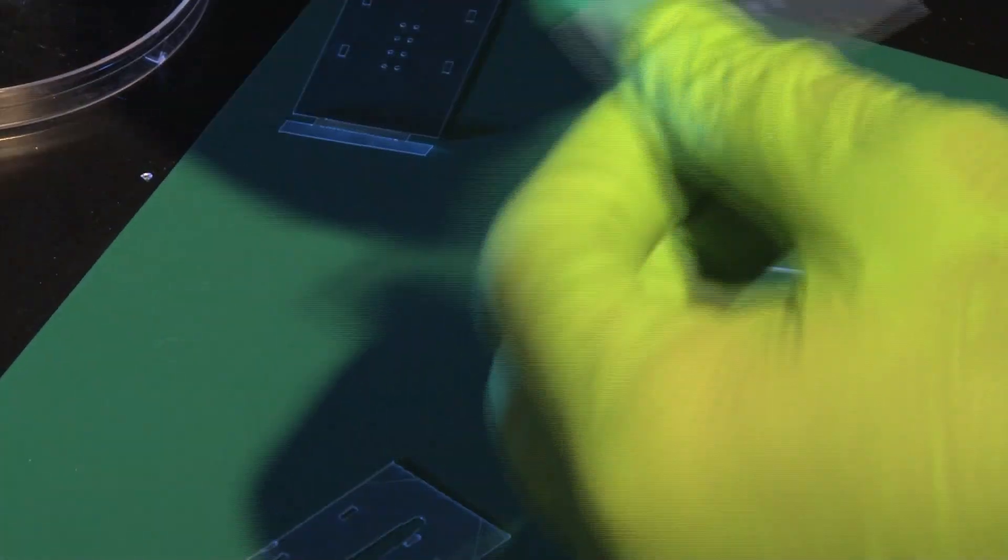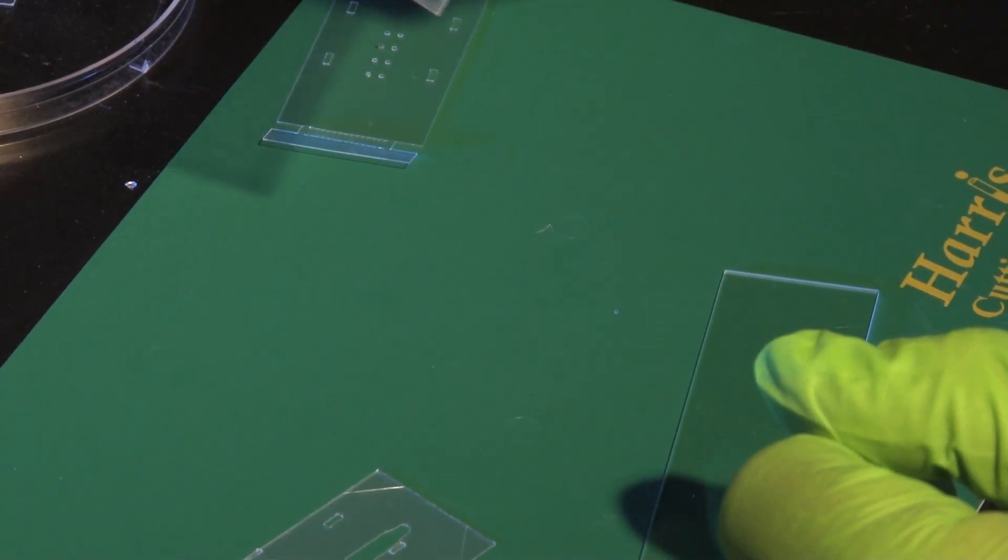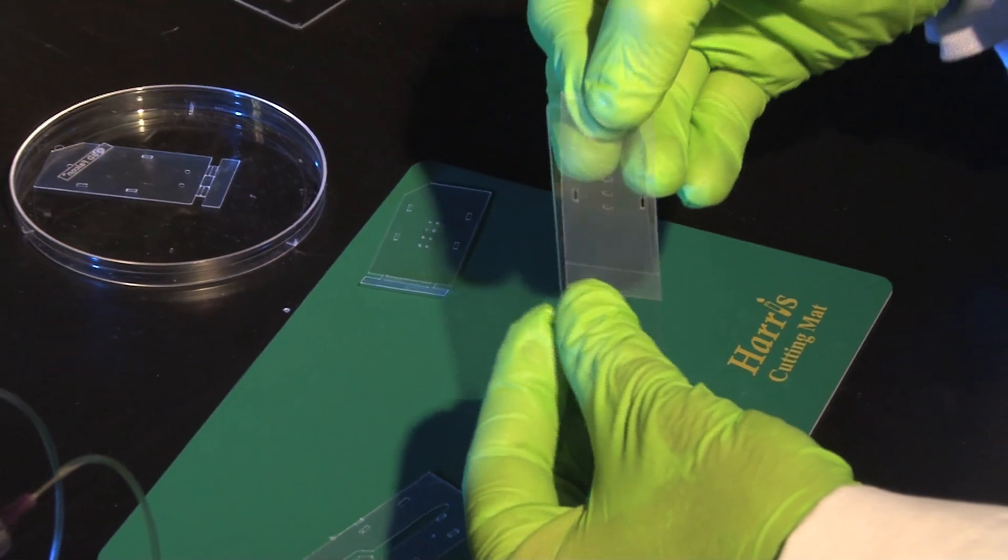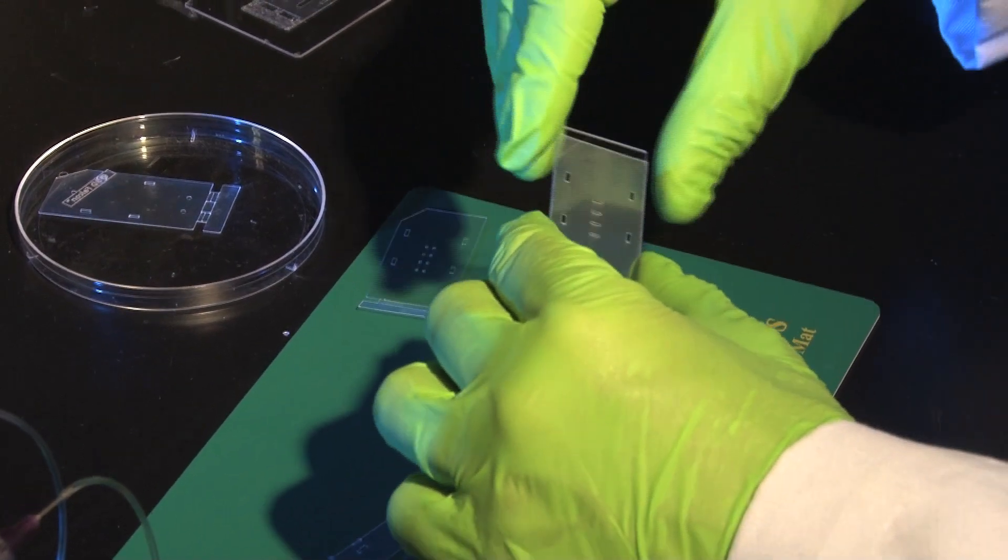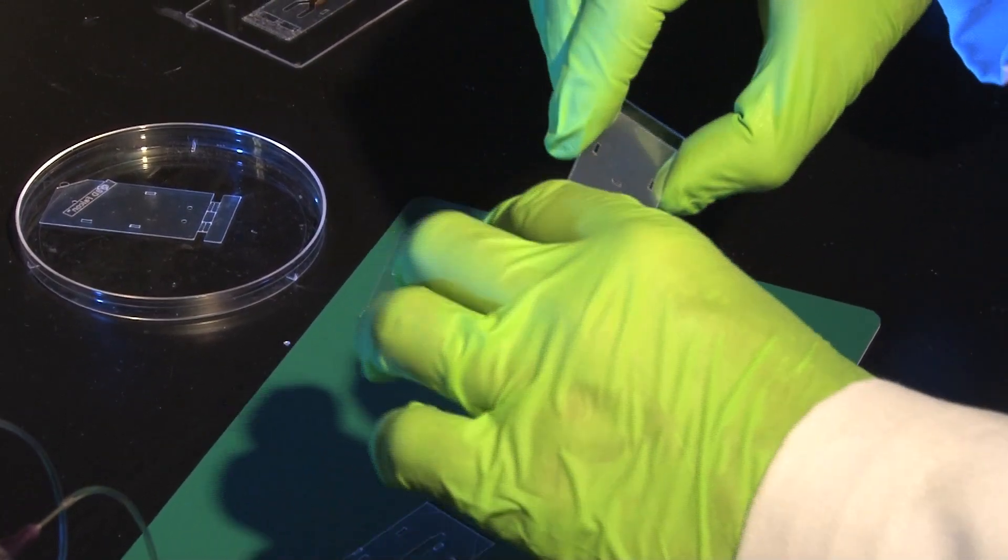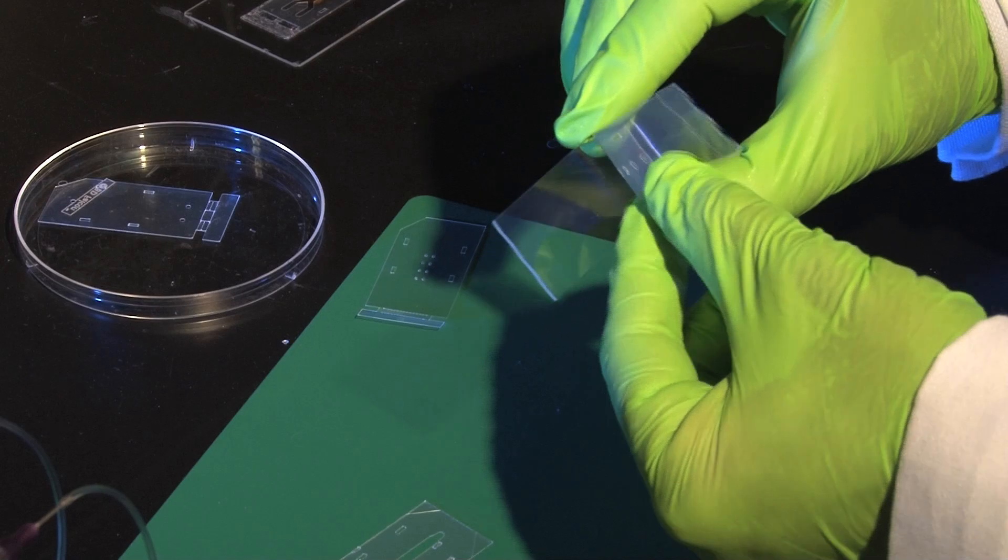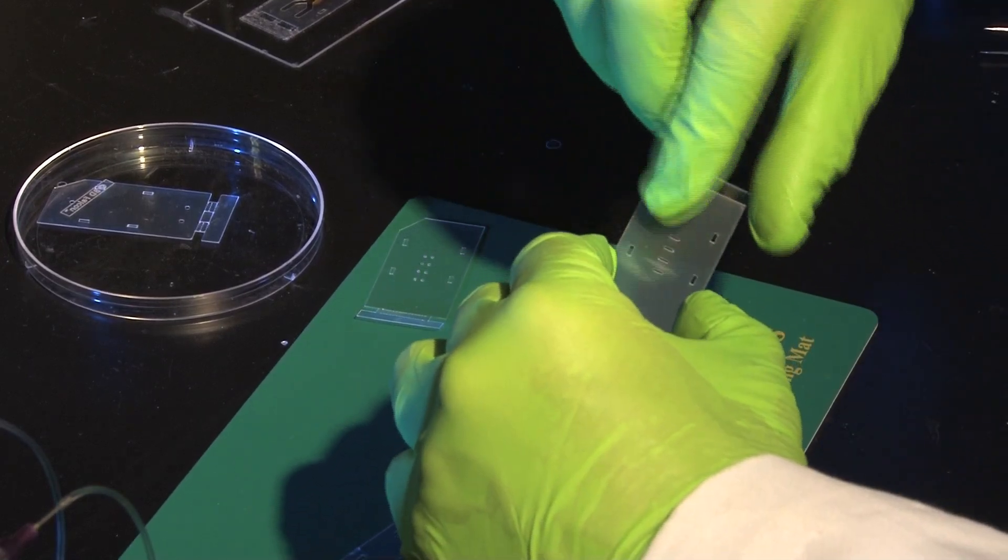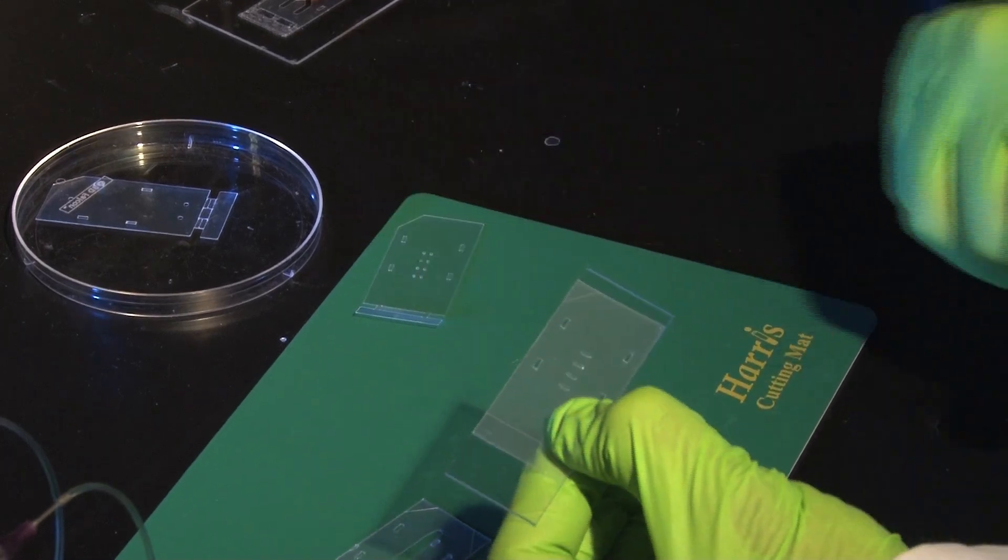So the way to assemble it would be we take one of the double-sided tape films. It's already pre-cut and we align it and place it on a glass slide. Actually I would remove from here the liner on the back side so that it actually sticks. So these little trenches will form the very channels.